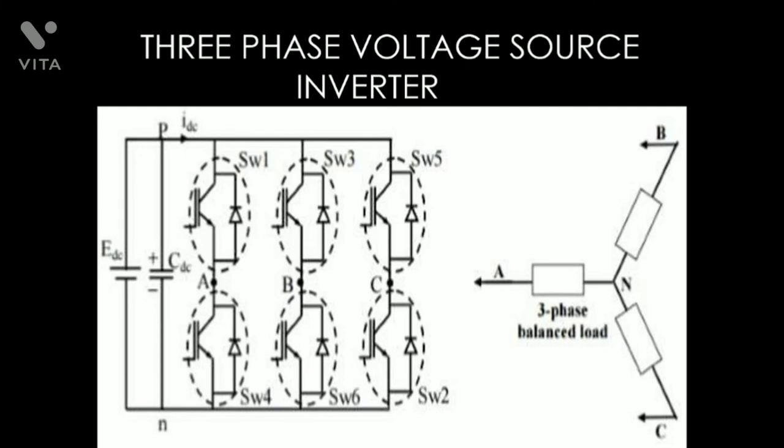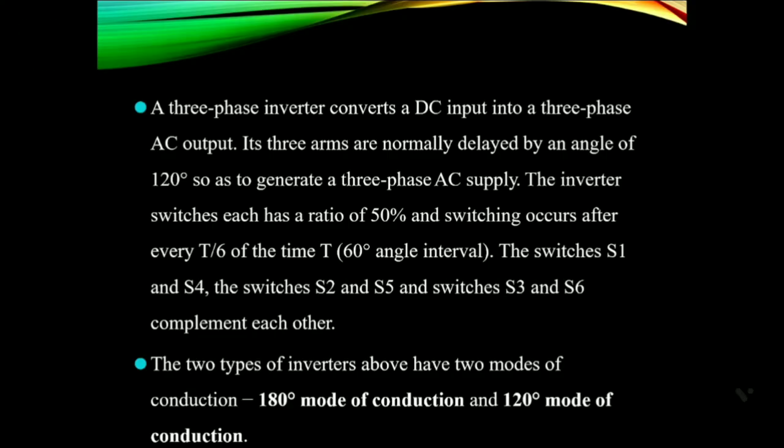This is the circuit diagram of the three-phase voltage source inverter. A three-phase inverter converts a DC input into a three-phase AC output. Its three arms are normally delayed by an angle of 120 degrees so as to generate a three-phase AC supply.